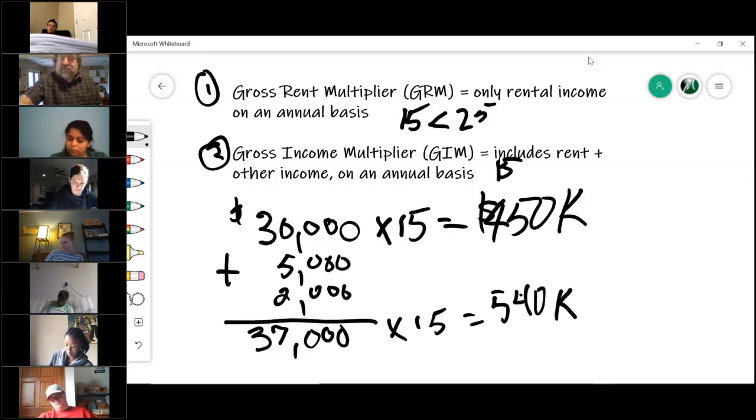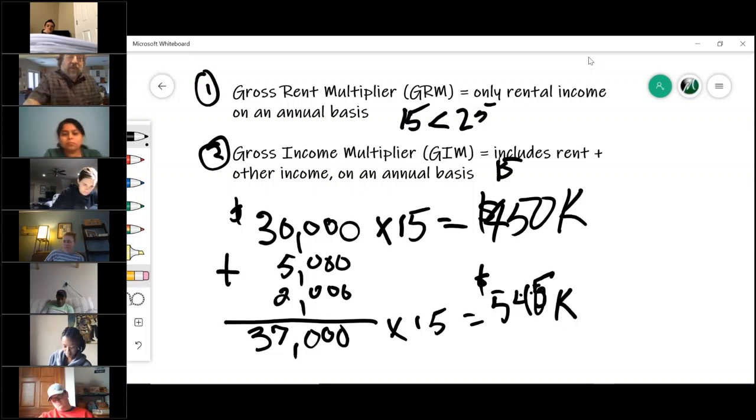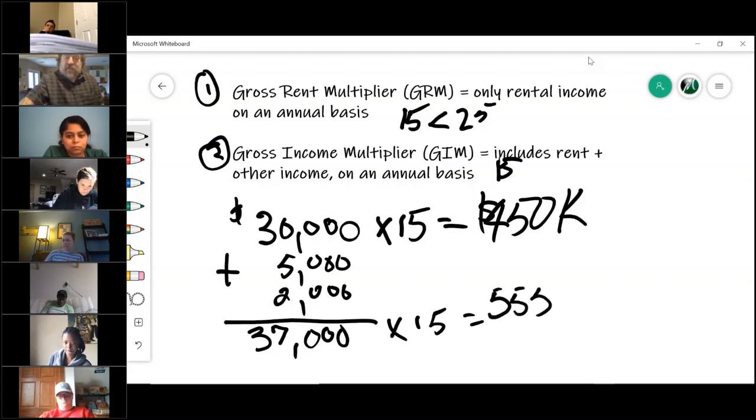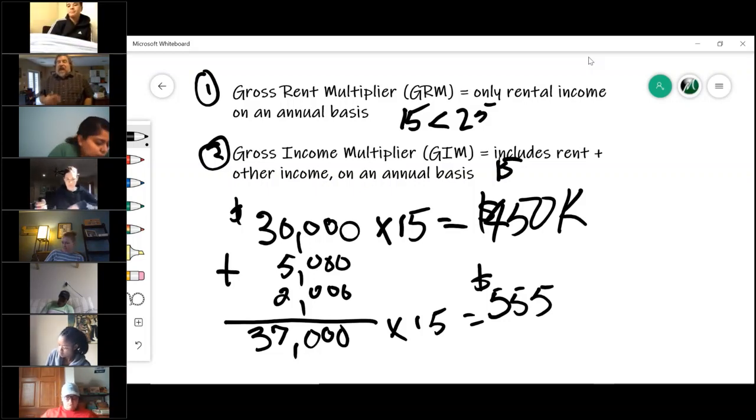You take 37 times 15 and what do you get? Another 90 grand onto that. 540,000 is the value. I hope I did that math right. Seven times 15 is 105. 105 into 450 would be 555. Is that what you got, Shauna? Yes.